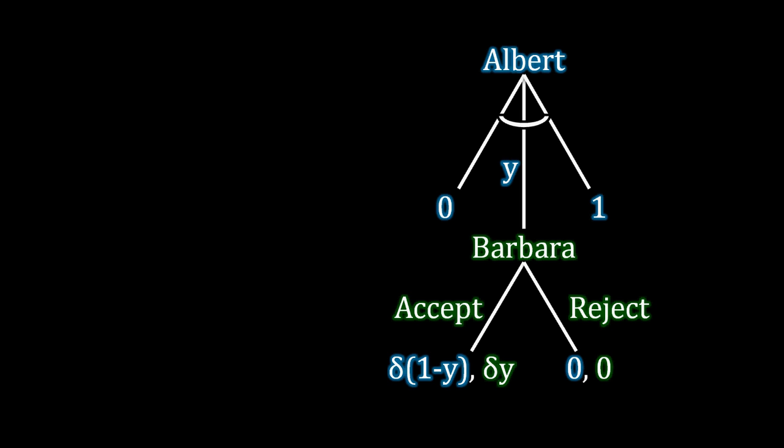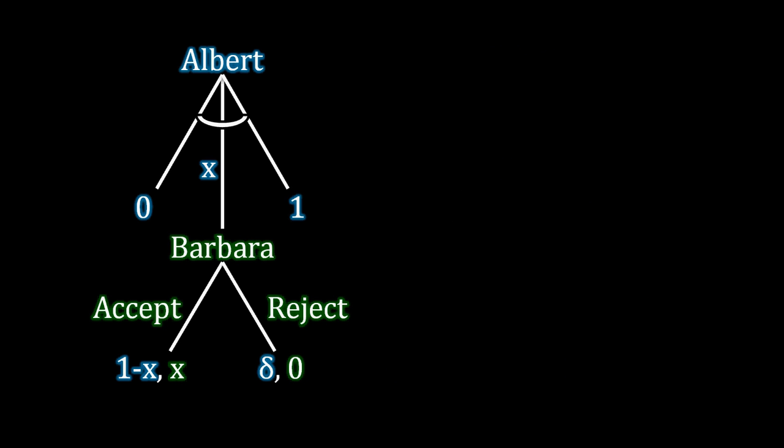Well, now that we know what happens in the second stage of the game, we can take that information and look at the first stage of the game. So we know in the second stage that Albert earns delta and Barbara earns zero. So if we plug that into the first stage of the game, well, now we can solve this part of the game as well.